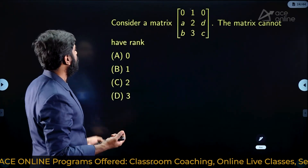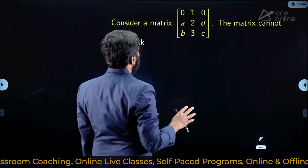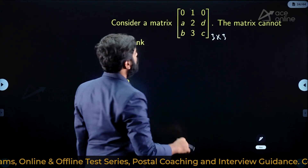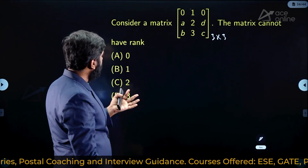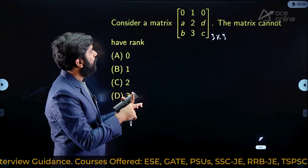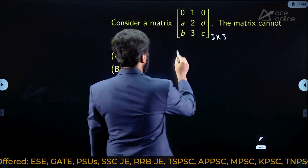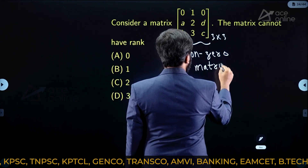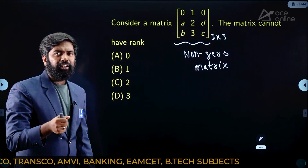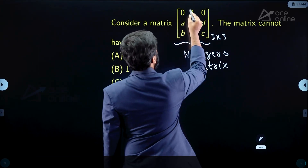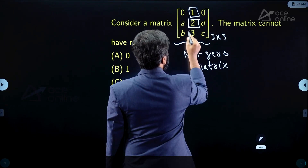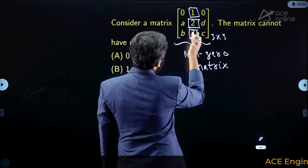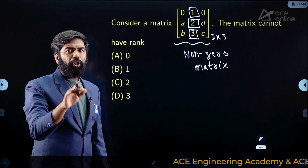Consider a 3×3 matrix with entries 0, 1, 0, a, 2, d, b, 3, c. The matrix cannot have rank dash. A 3×3 matrix can have rank 3, 2, or 1. Clearly this is a nonzero matrix because at least the elements 1, 2, and 3 are nonzero elements.